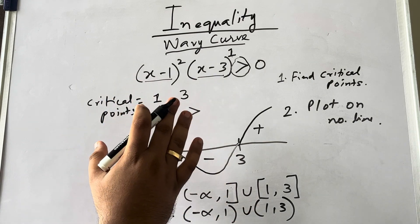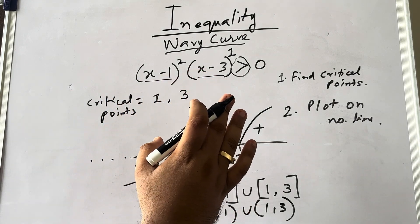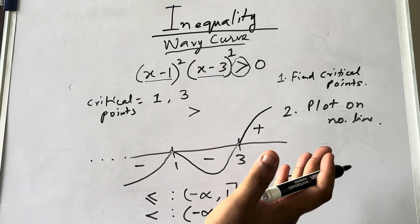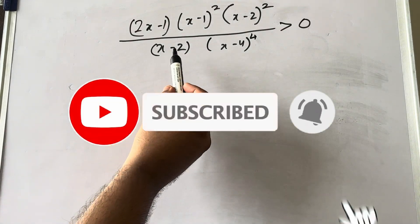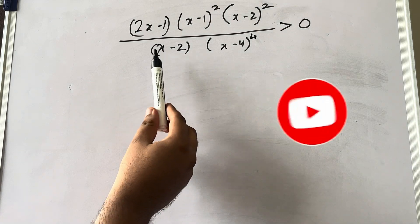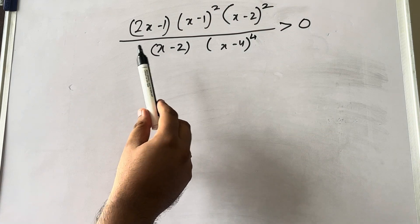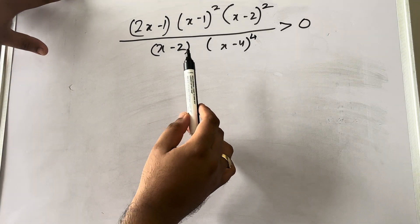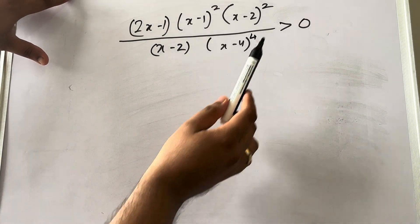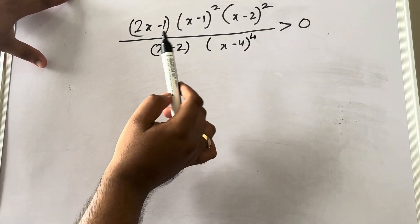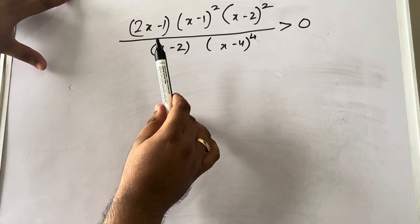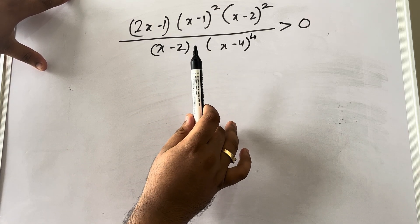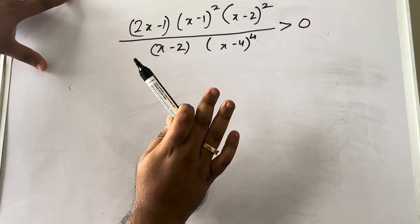Let's move on to our next question. This equation is given and you have to find the values of x. The inequality sign is greater than. The first thing I taught you was to find the critical points.